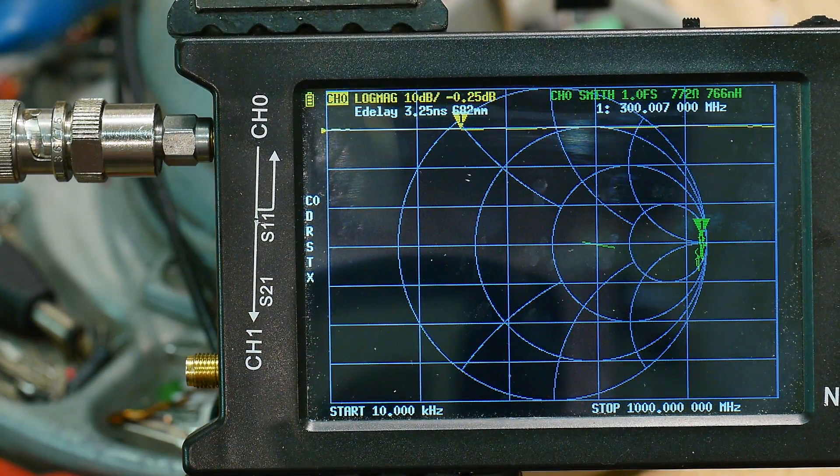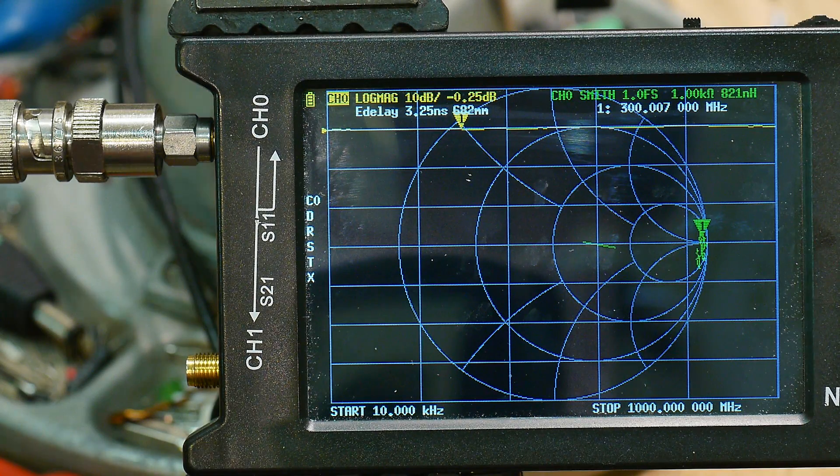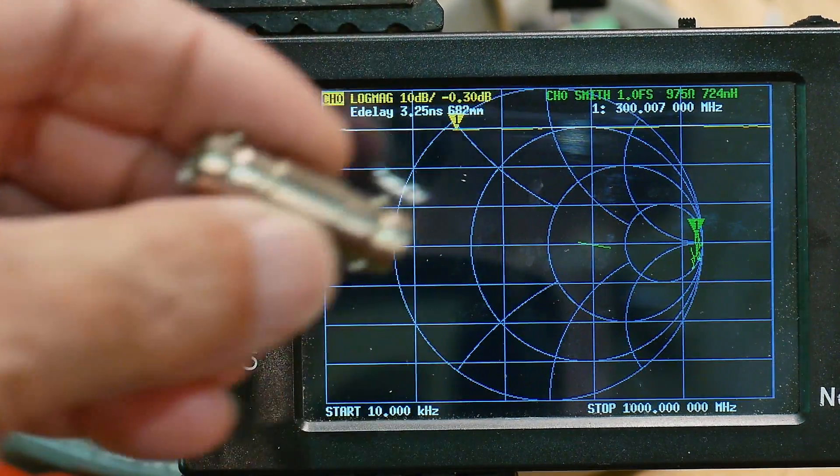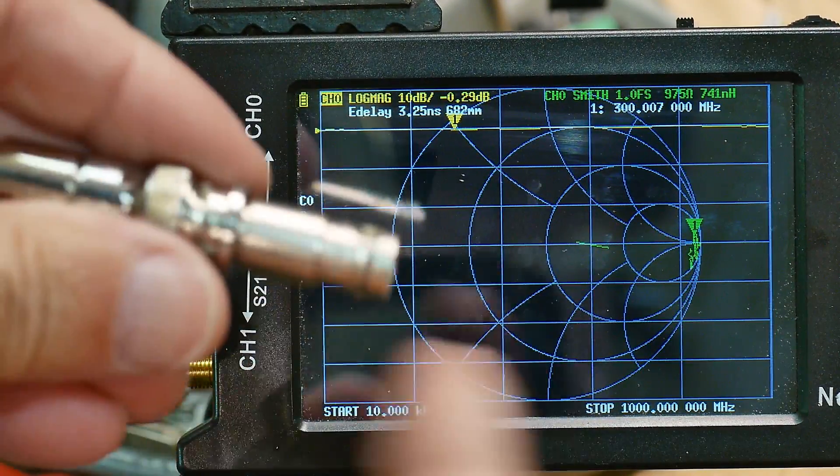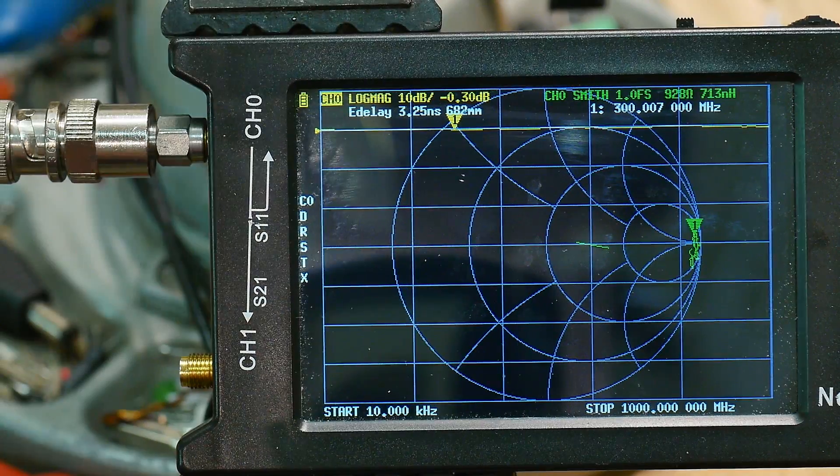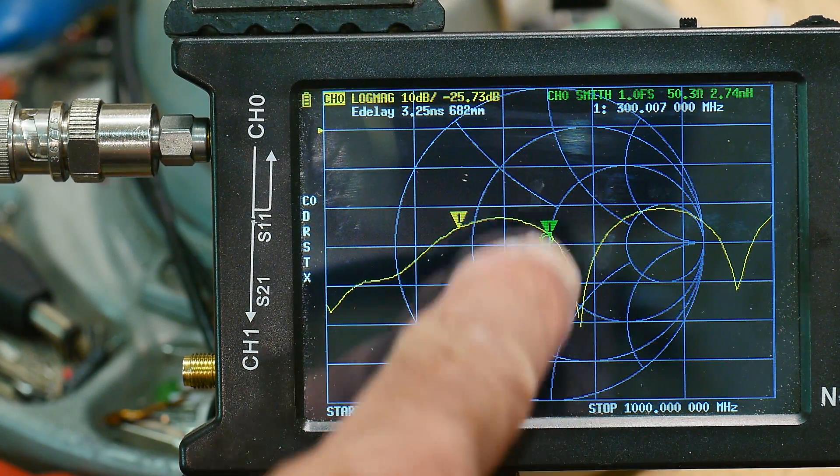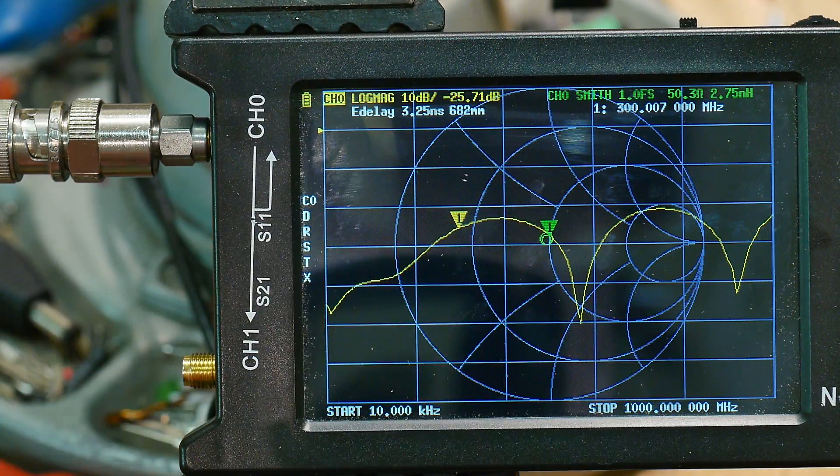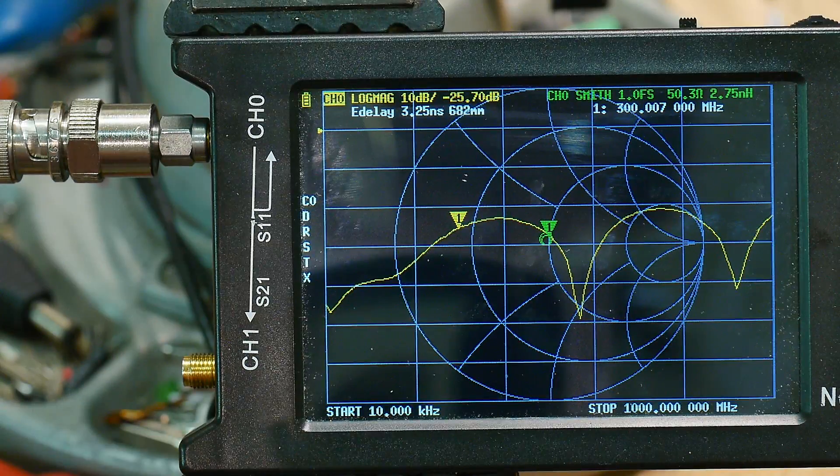So we're starting over here at an open and so I'm going to first test it. I have a regular BNC and a good load. So now I have a female load and I'm going to stick that on there and you can see that the Smith chart is right in the center and our return loss is less than 20 dB all the way to a gigahertz.